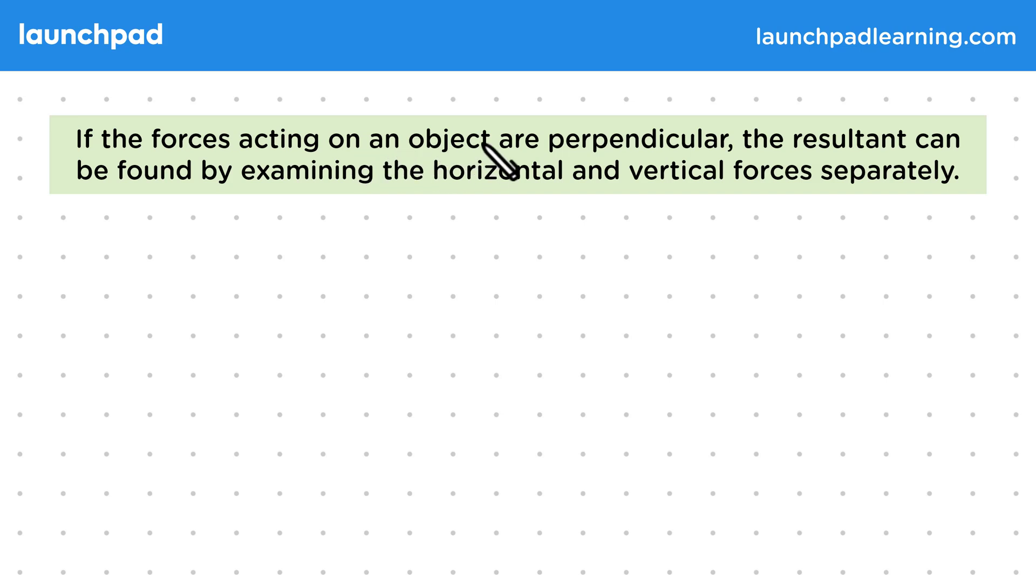If the forces acting on an object are perpendicular, the resultant can be found by examining the horizontal and vertical forces separately. Remember that perpendicular simply means at right angles.